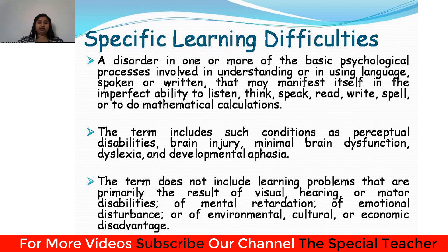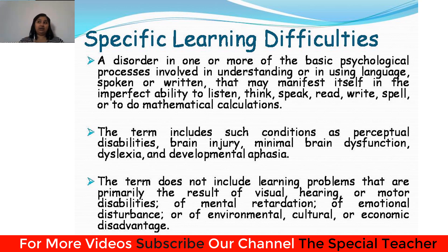Specific learning disabilities are said to be a hidden disability, where a child finds difficulty in many areas of learning. It is called hidden because in the early stages of childhood we are not able to identify it. With experience, we can only identify a child with learning disabilities mainly by approximately age five or above, when the child demonstrates all factors known as LSRW — listening, speaking, reading, and writing.